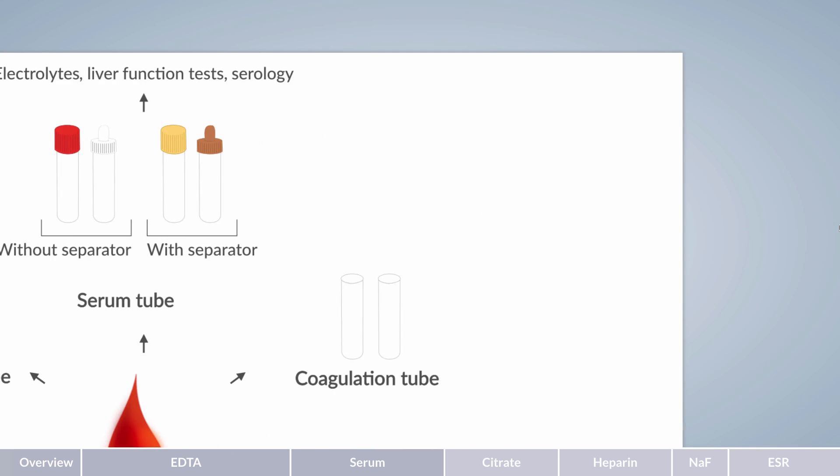To analyze coagulation parameters in blood, a sample is required in which coagulation is not irreversibly inhibited, as accomplished in the EDTA tube. But the blood sample must be reversibly stopped from further clotting before measurement. This is achieved using coagulation tubes, which contain sodium citrate. Therefore, they are also often referred to as citrate tubes.